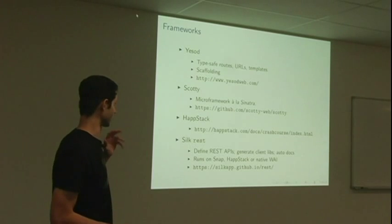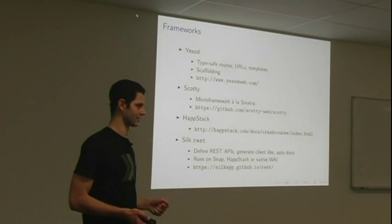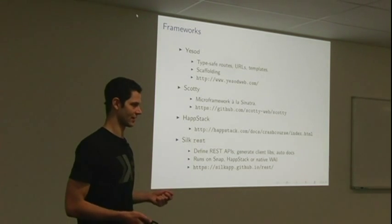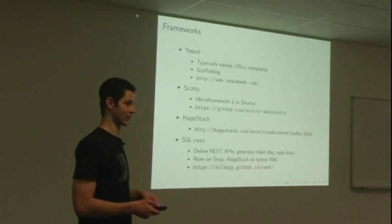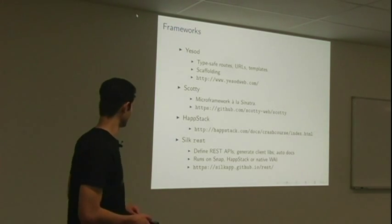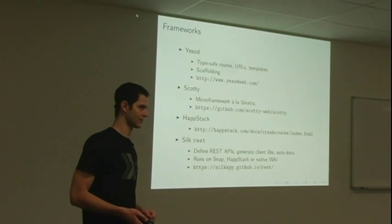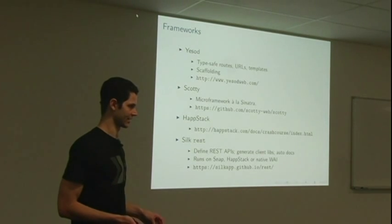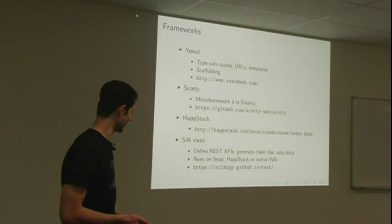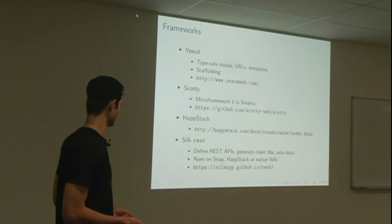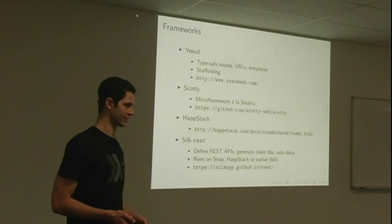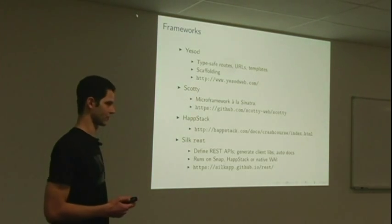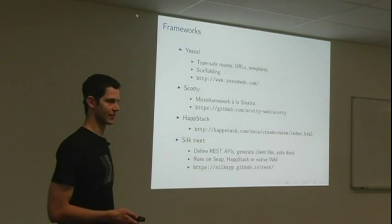Frameworks, aside from Snap, there's Yesod. It gives you type safe routes, URLs and templates. That was one of the frameworks I was alluding to when I suggested that you could have compile time checking for your templates and making sure that variables you're referencing actually exist. If they don't, you're not even going to get a program. It's got scaffolding as well. Scotty is a micro framework, kind of in the Sinatra style. It's pretty bare bones, but I've used it and I like it. It's good for small APIs. Hapstack I haven't used, but it seems to be one of the other popular frameworks. And if you're just making a REST API, there's a library called REST from Silk and it just lets you define the API and you can generate client libraries for Haskell, JavaScript and Ruby. Auto documents the API. You can run it on Snap, on Hapstack or as a native Y application.